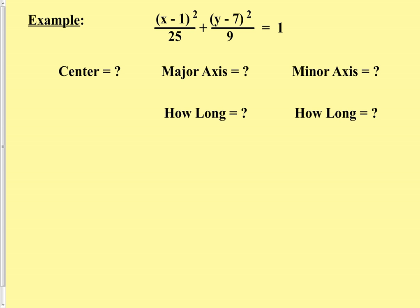Here are the questions we really need to answer in order to get our graph rolling: we need to know where the center is, which axis is going to be the major axis and which is going to be the minor axis, and the lengths of those axes so that we could plot our north, south, east, and west foundation points in the graph. For the center: remember that the numerators are supposed to say x minus h and y minus k — they both say minus. That means the 1 and the 7 did not change those signs, so they must be positive. Our center is at 1 comma 7.